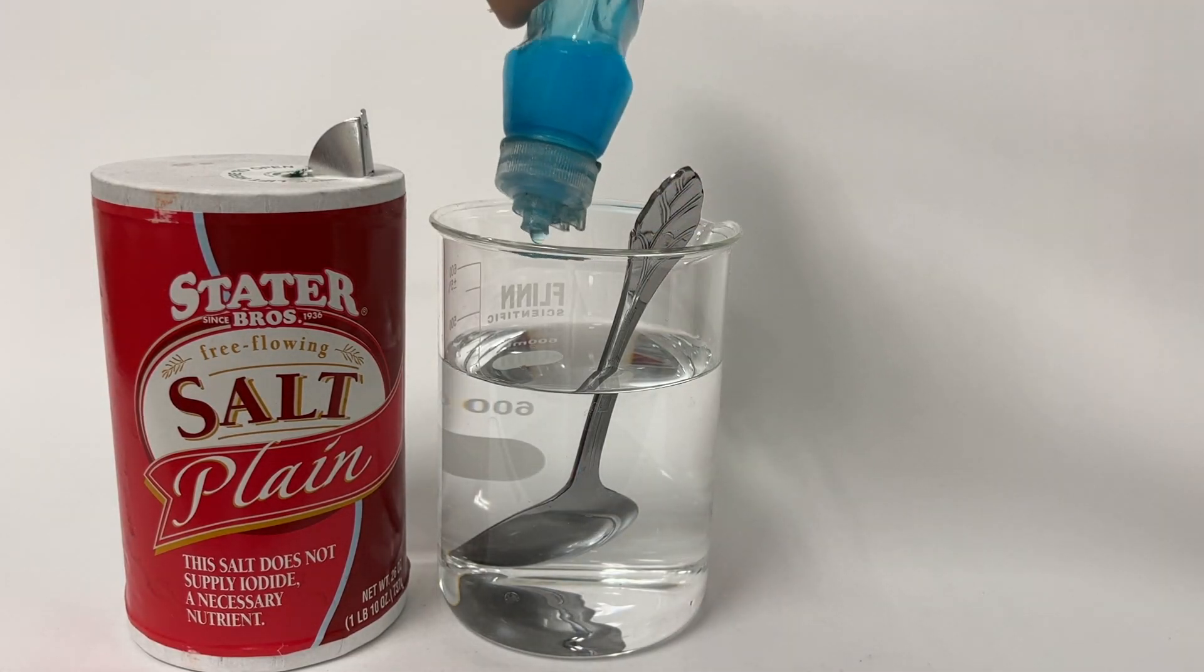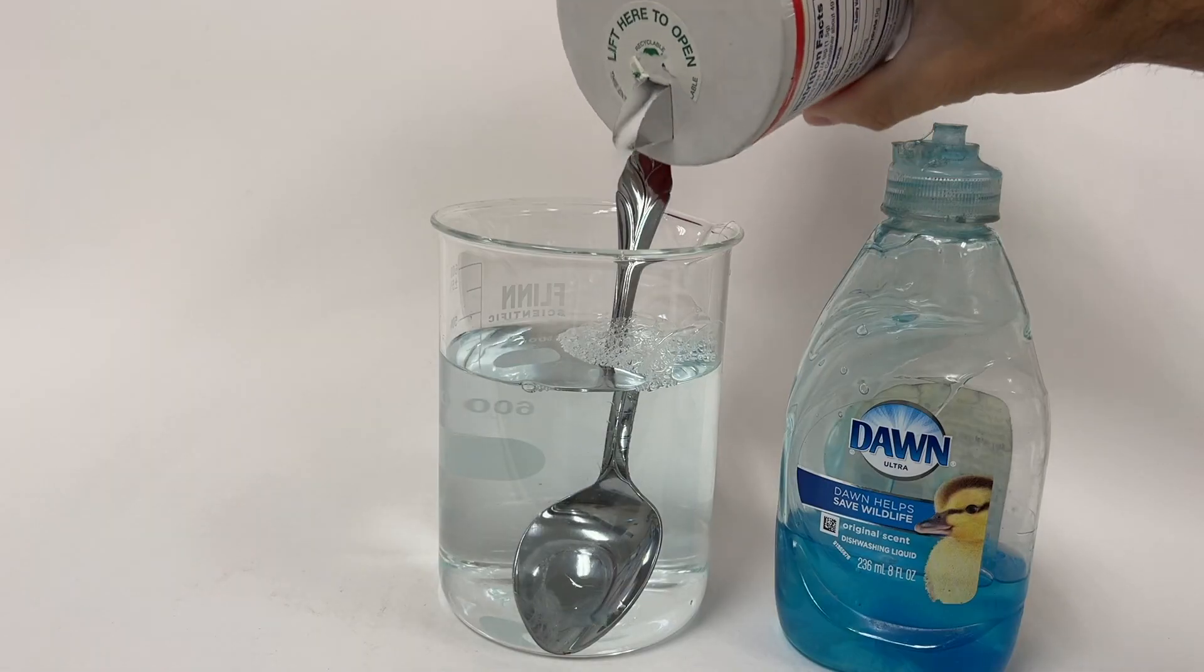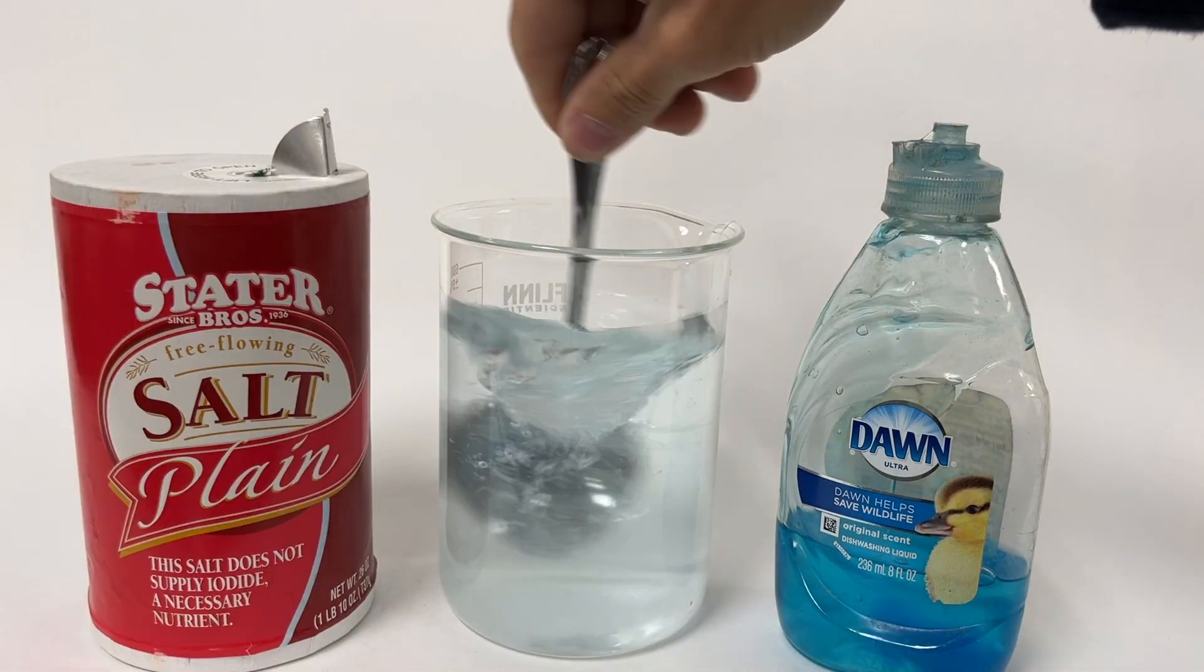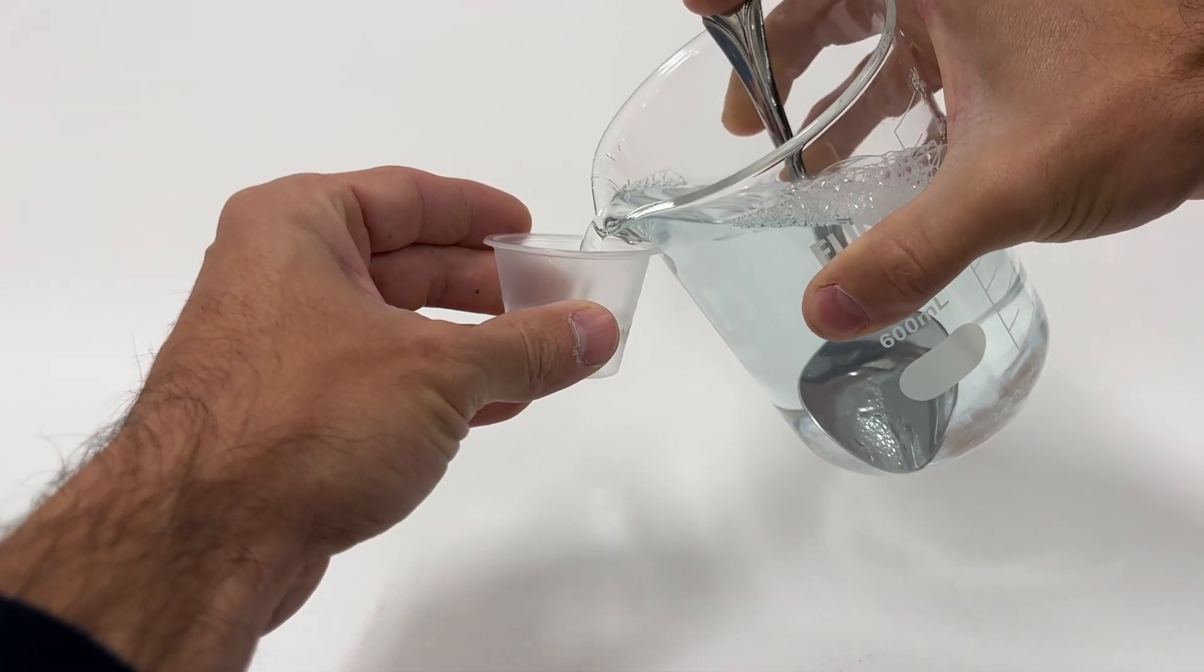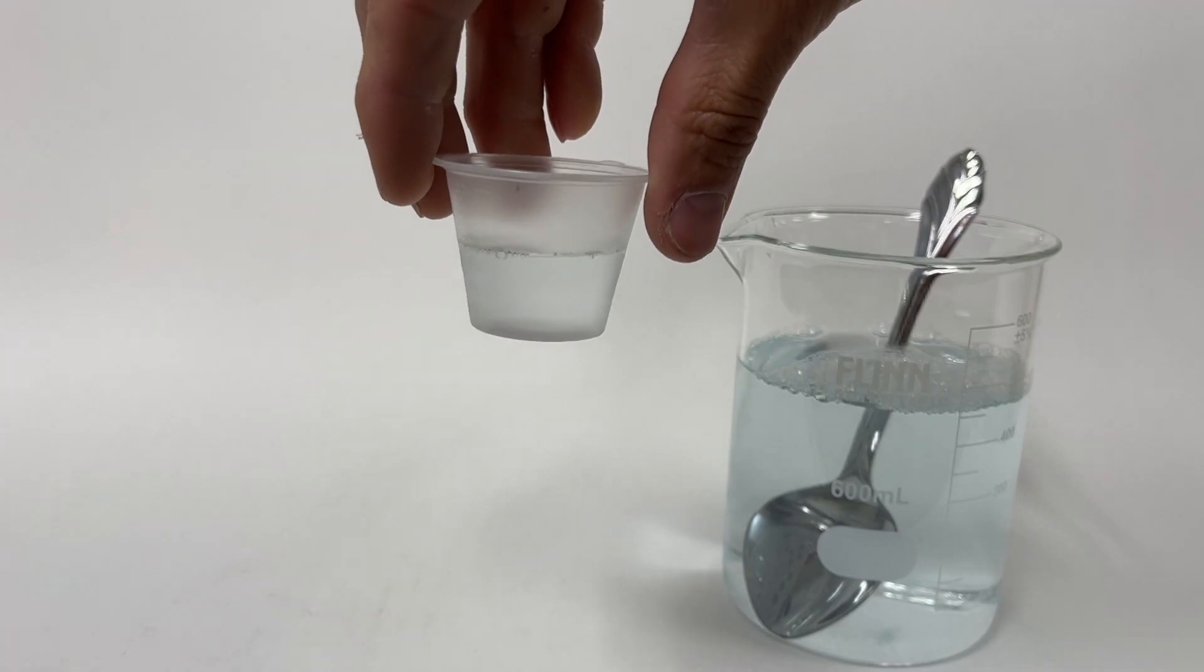Next, make a soapy, salty solution by adding soap and salt to some water and mixing it up. No need to measure exact amounts, just pour a little of each in and mix it right up. Each group will need about 20ml of solution for the lab.